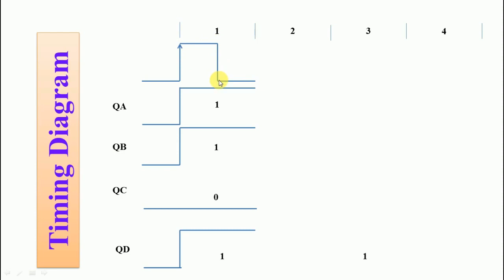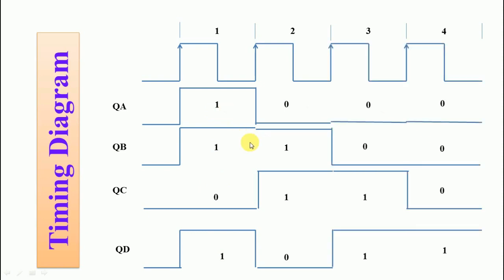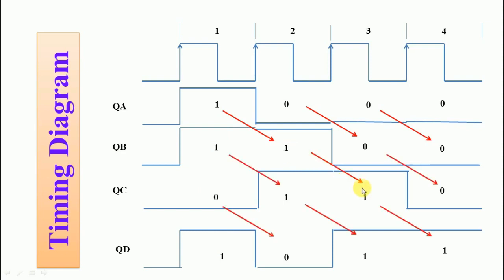This is the timing diagram of the parallel in serial out shift register using positive edge-triggered flip-flops. After the first clock pulse, all data is present at QA, QB, QC, and QD. After the second clock pulse, bits shift further; after the third and fourth clock pulses the bits continue to shift. The final serial data output is 1 0 1 1, obtained after the fourth clock pulse.